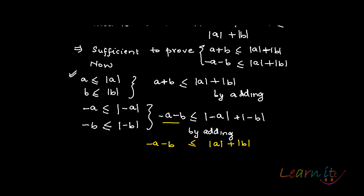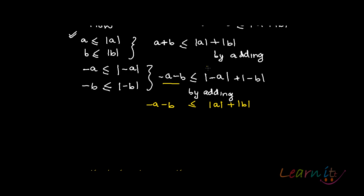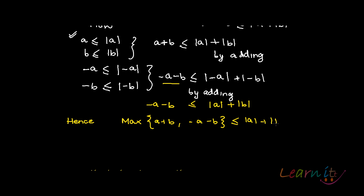It's the same thing. Hence, in all cases, we have proved what is sufficient for us — both cases. So max(A plus B, minus A minus B) is less than or equal to |A| plus |B|. Hence, we have proved the triangle inequality.